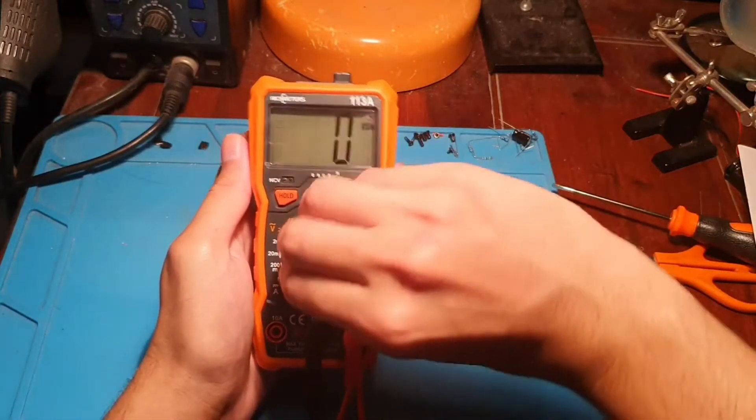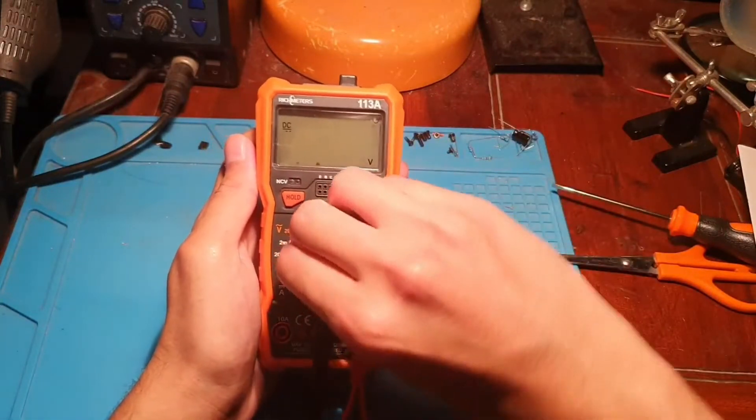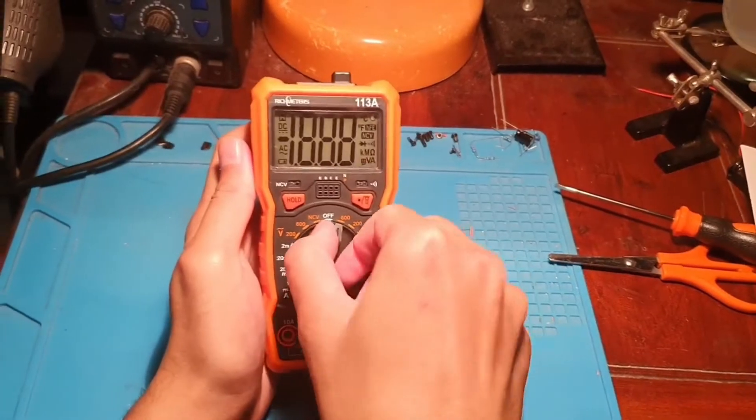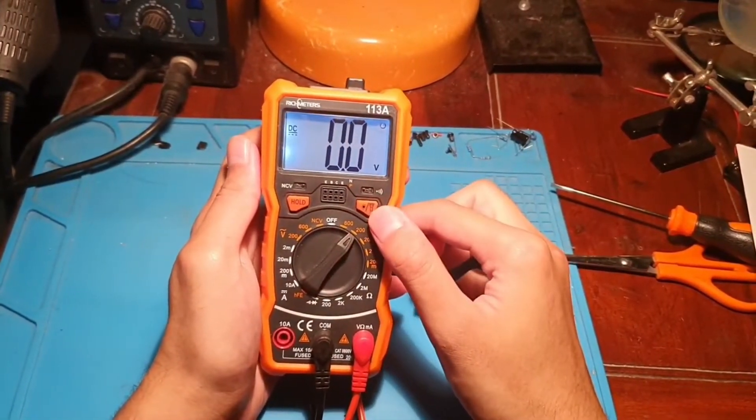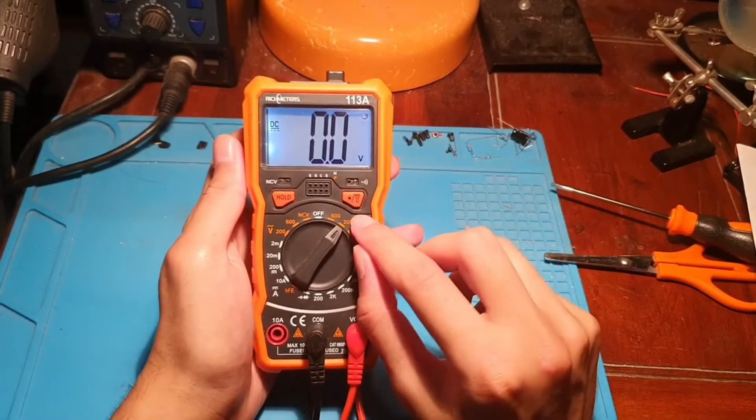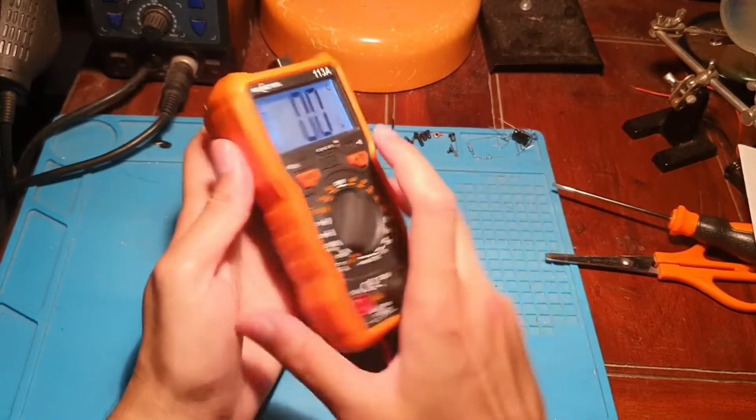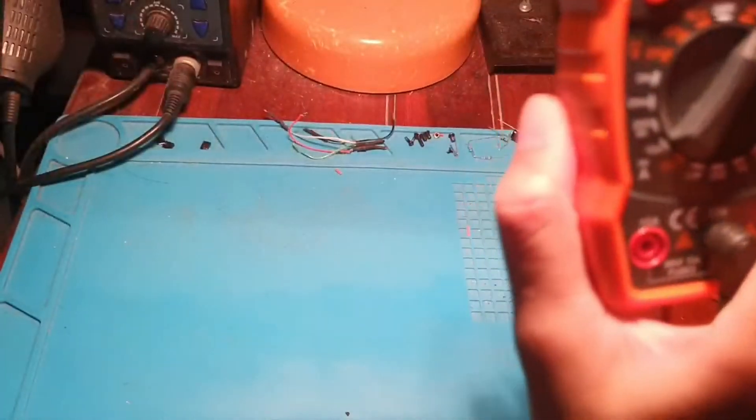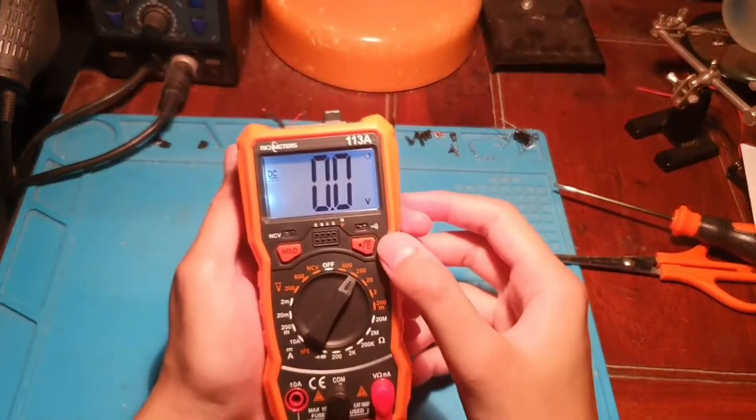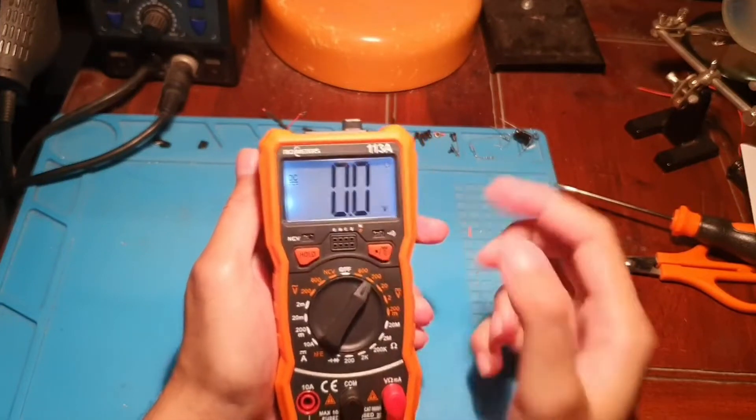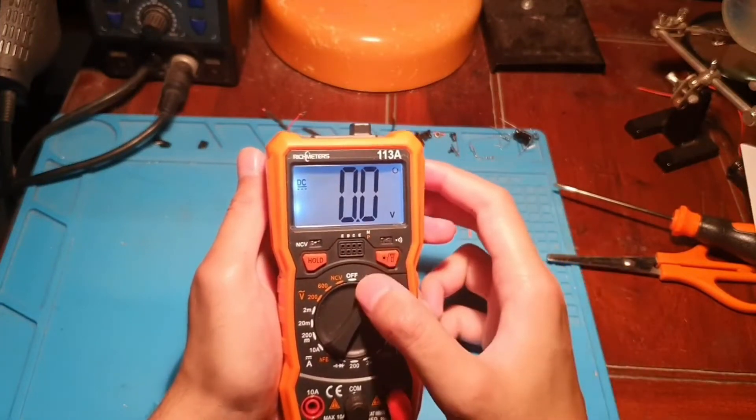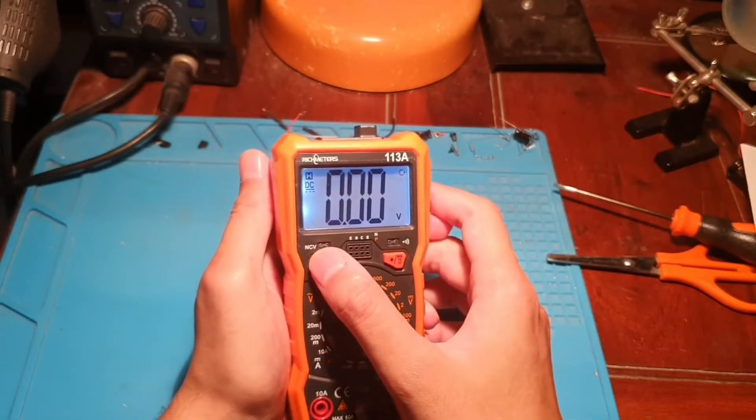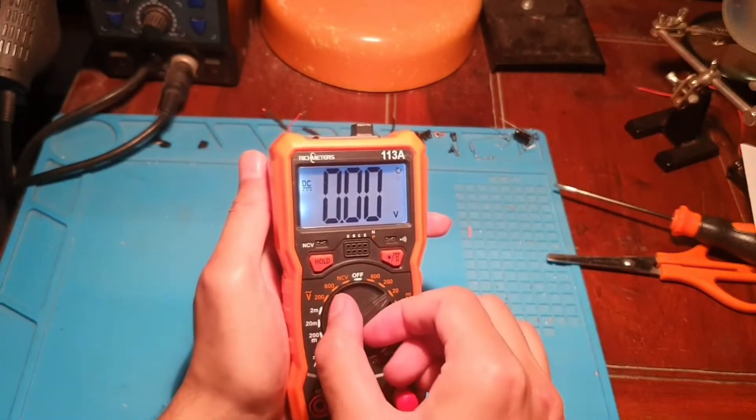So far, it feels nice for the knob when I'm turning it around. It comes with a backlight as well. You can turn on and off the backlight, and you can hold the value. If we're doing a measurement, we can hold the value for the measurement there.